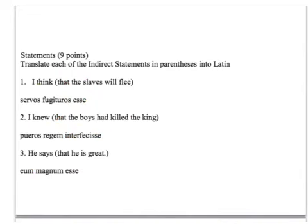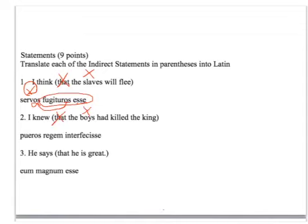'I think that the slaves will flee.' Indirect statement — don't translate 'that.' The subject of an indirect statement is slaves, so I write that in the accusative. 'Will flee' is the future active infinitive. Notice the ending agrees with the subject. 'I knew that the boys had killed the king.' Don't translate 'that' in an indirect statement. The subject is boys — the subject of an indirect statement is in the accusative.